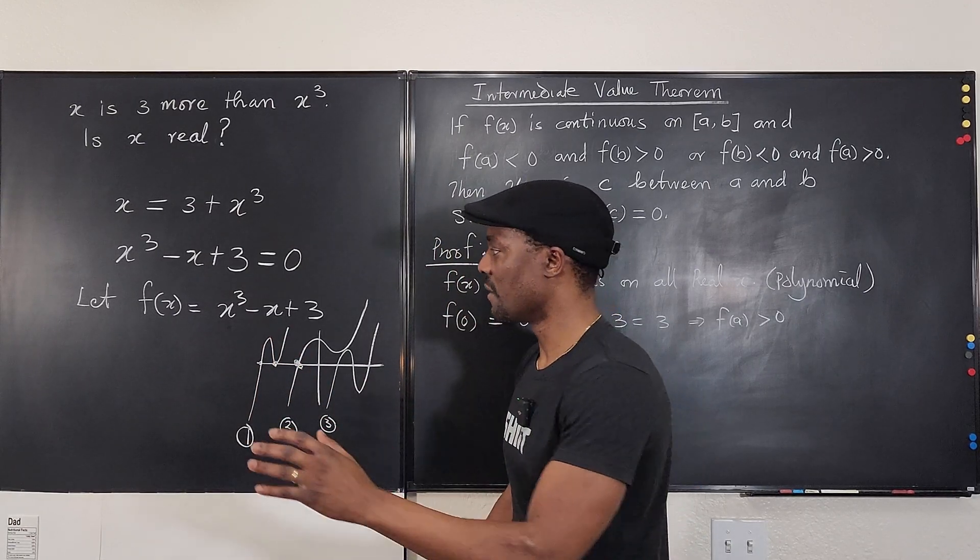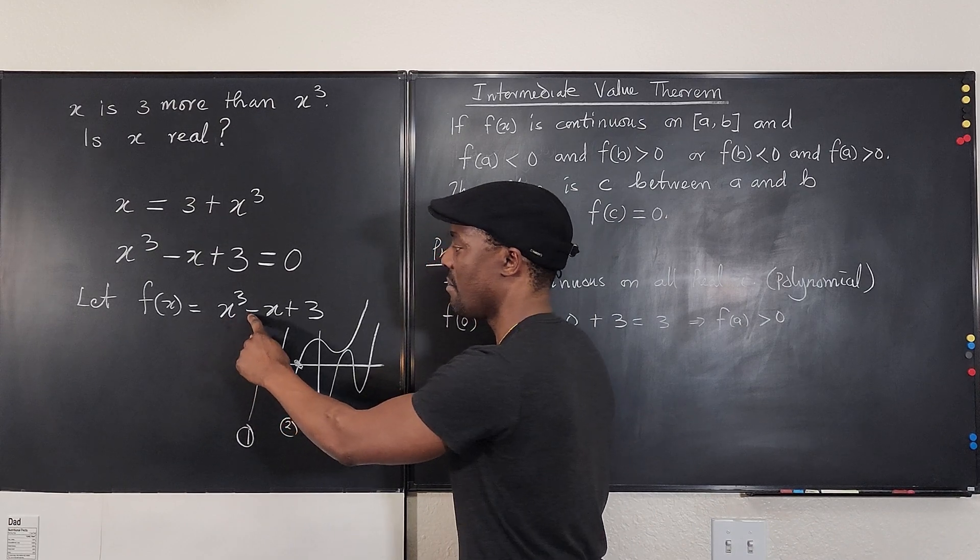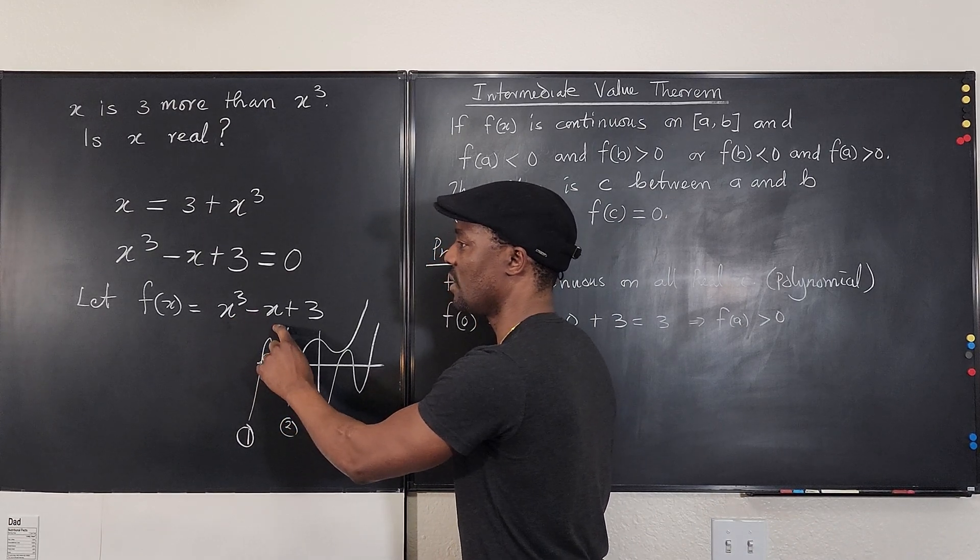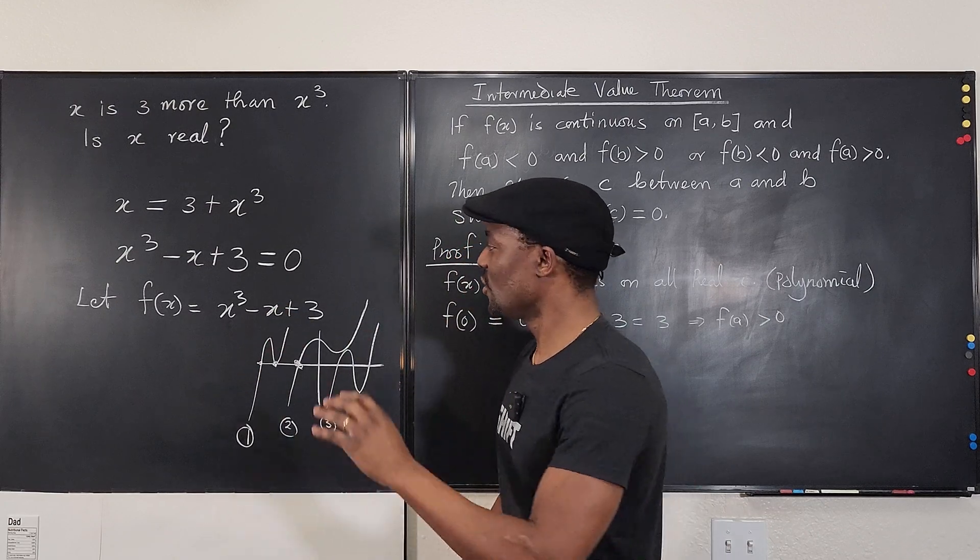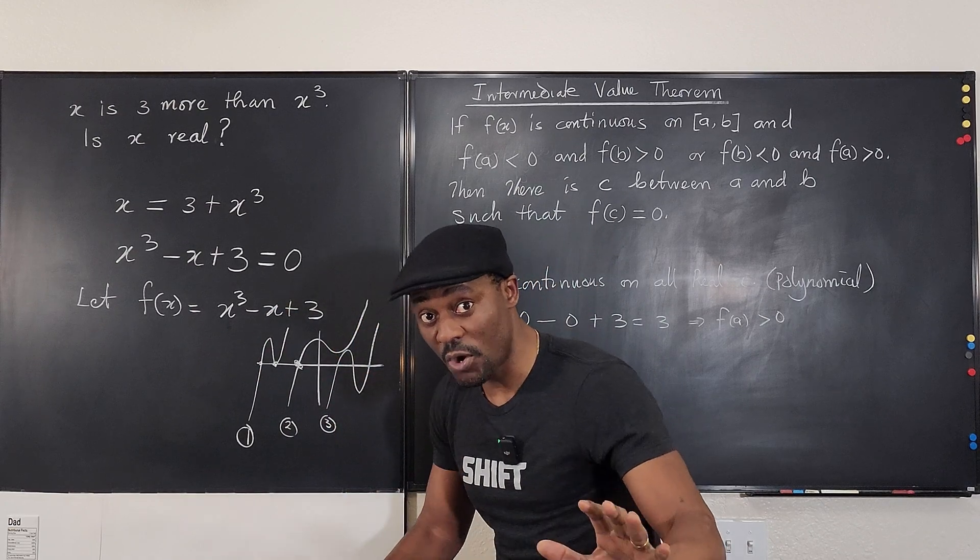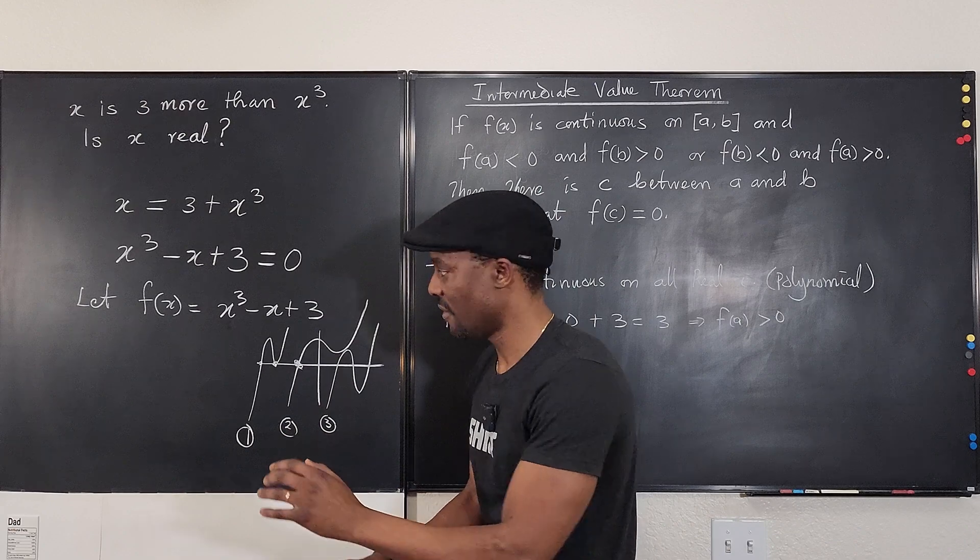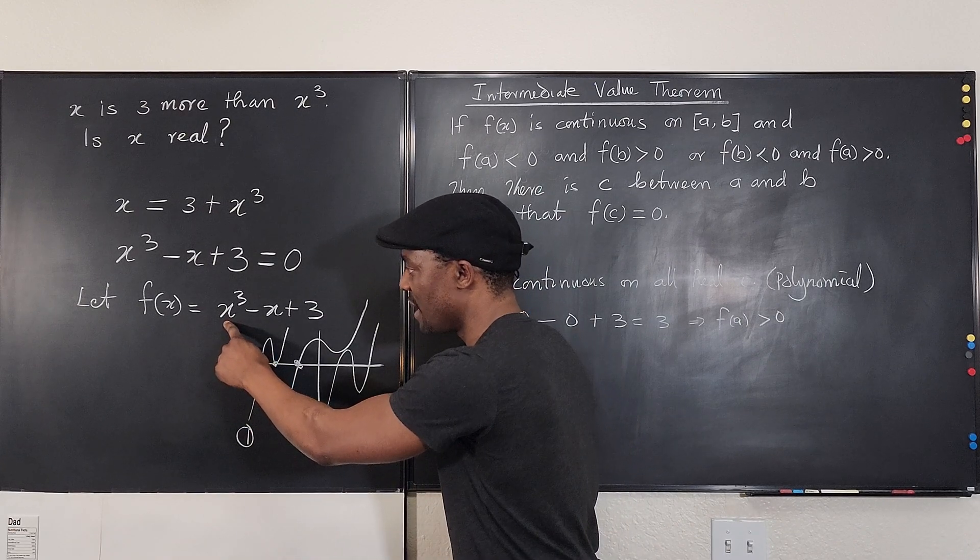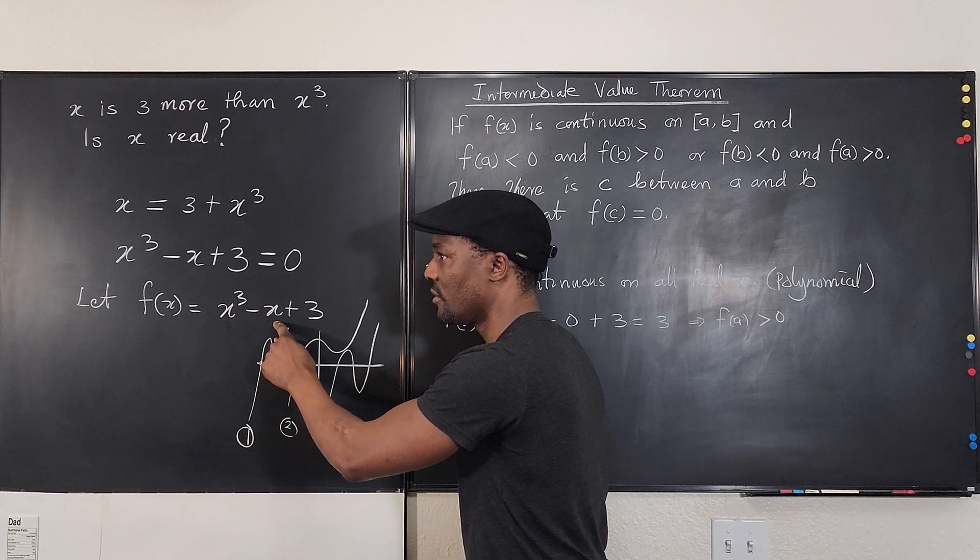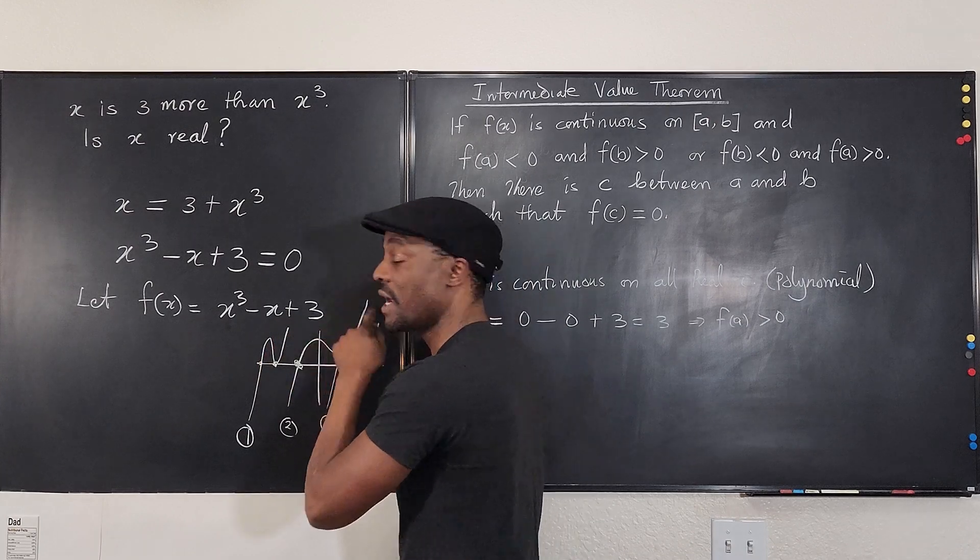Let's do negative one. Negative one will be negative one minus negative one, that's negative one plus one, that's zero. Not good. So let's do negative two. Small numbers are always smart. Don't go too far. Negative two will be negative eight. Negative eight plus two is, oh, we got an answer.